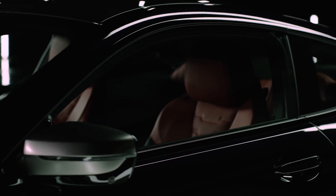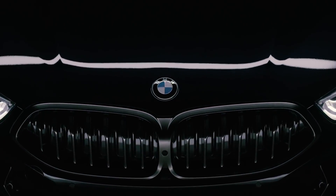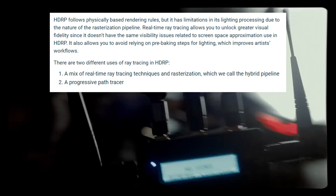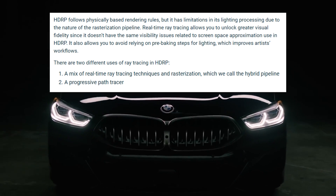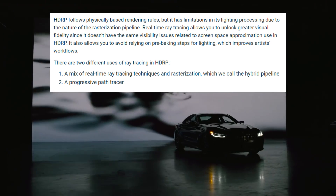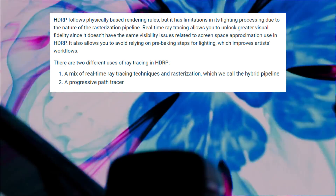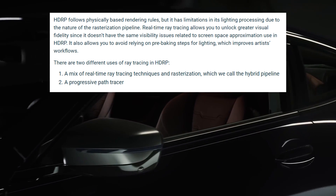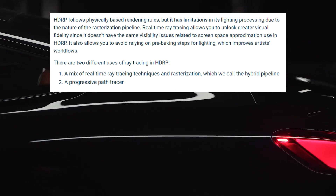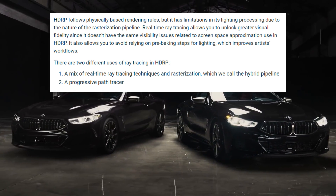Continuing the blog post — HDRP follows physically based rendering rules, but it has limitations in its lighting processing due to the nature of the rasterization pipeline. Real-time ray tracing allows you to unlock greater visual fidelity since it doesn't have the same visibility issues related to screen space approximation. It also allows you to avoid relying on pre-baking steps for lighting, which improves artists' workflows. According to Unity, there are two different uses of ray tracing in HDRP: number one is a mix of real-time ray tracing techniques and rasterization, which they call the hybrid pipeline, and number two is a progressive path tracer.